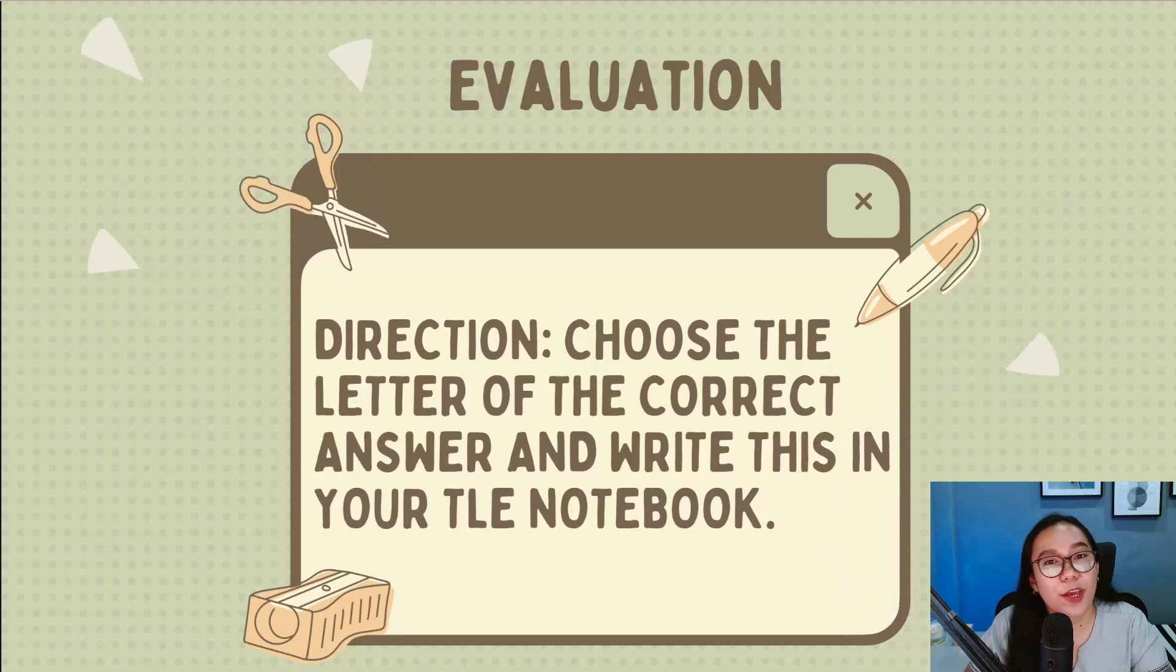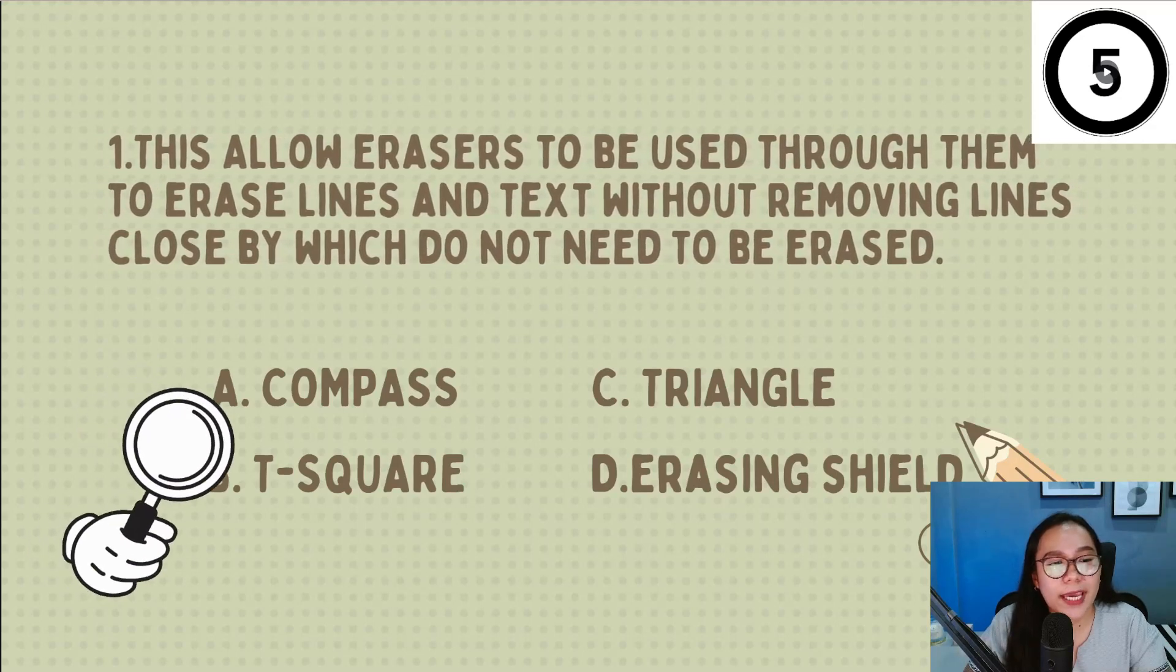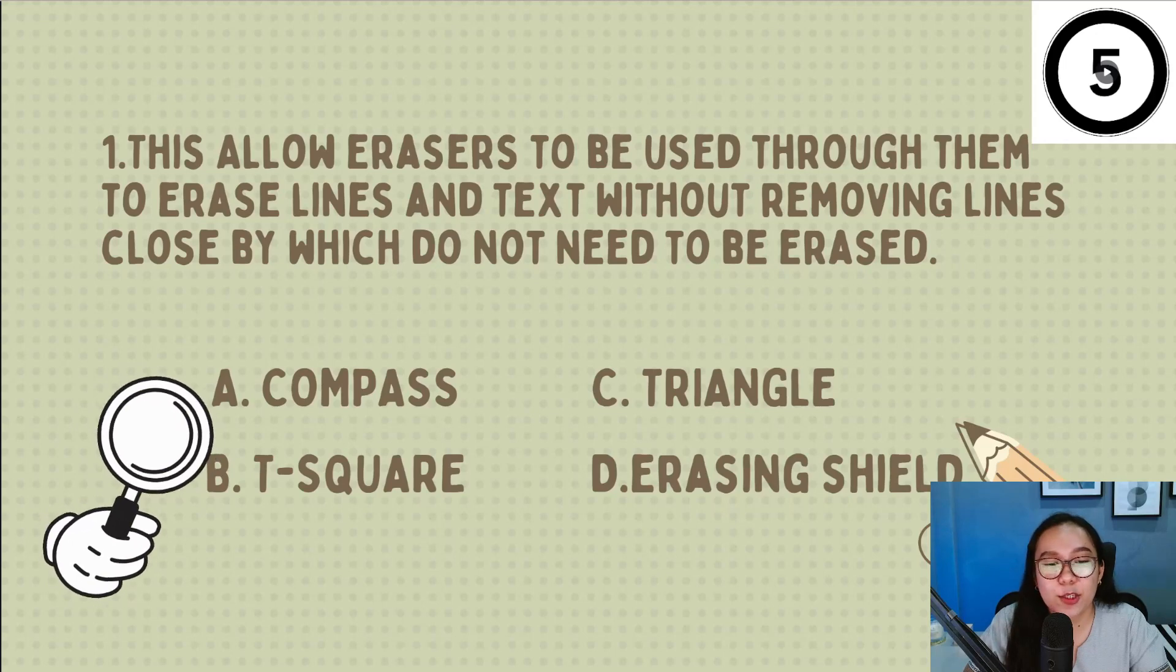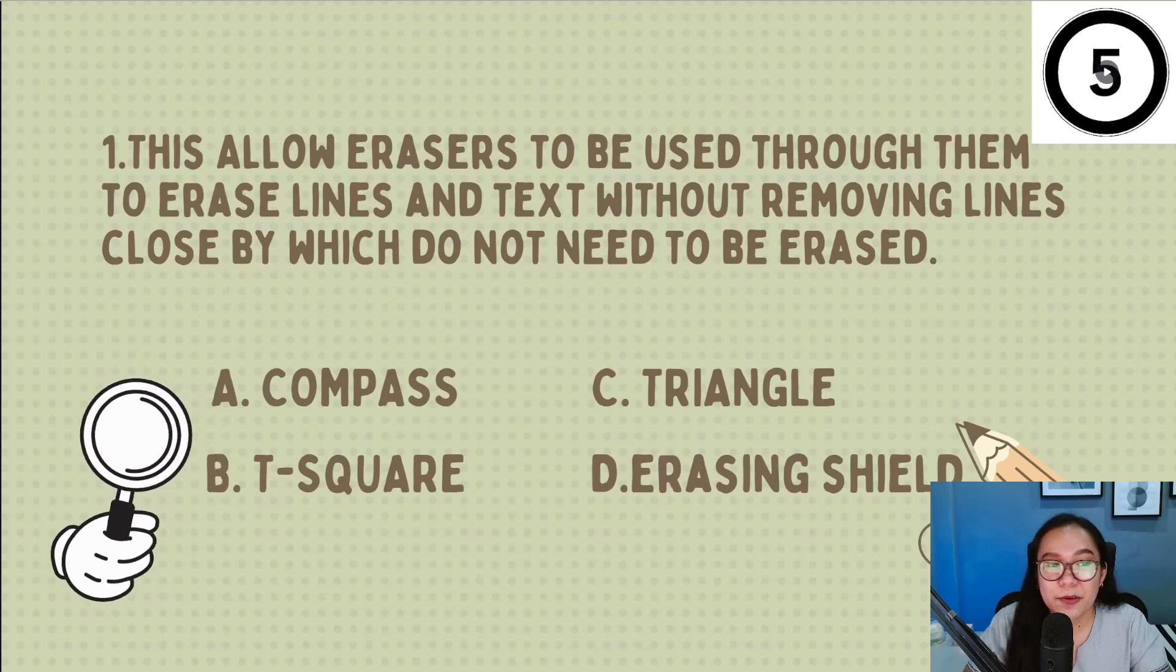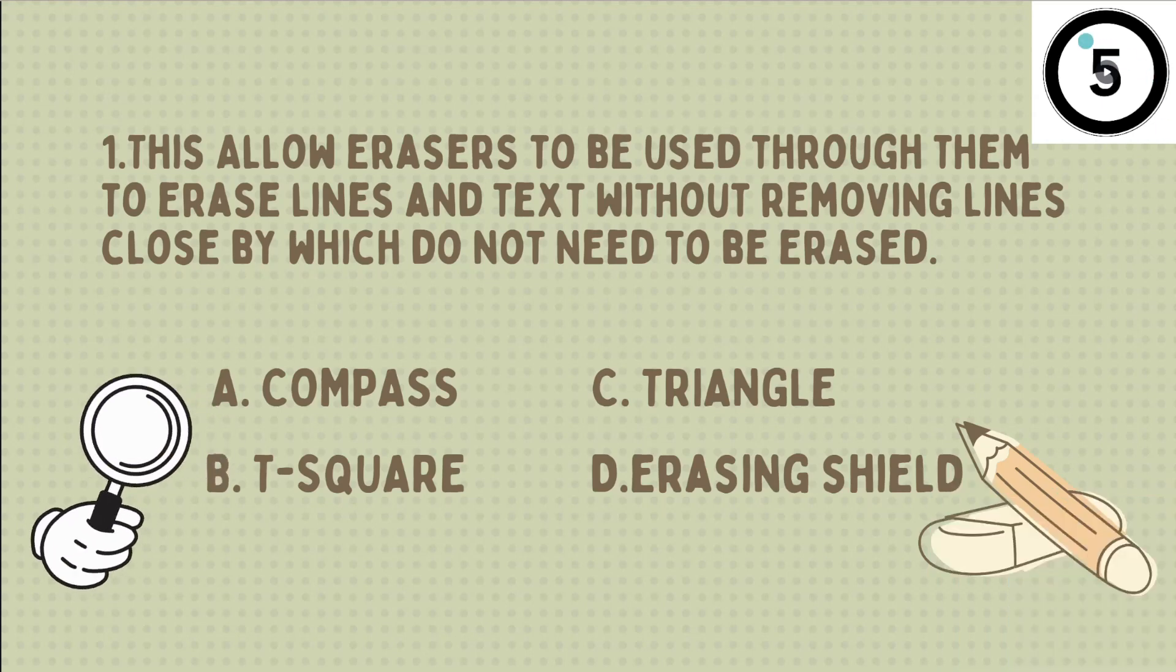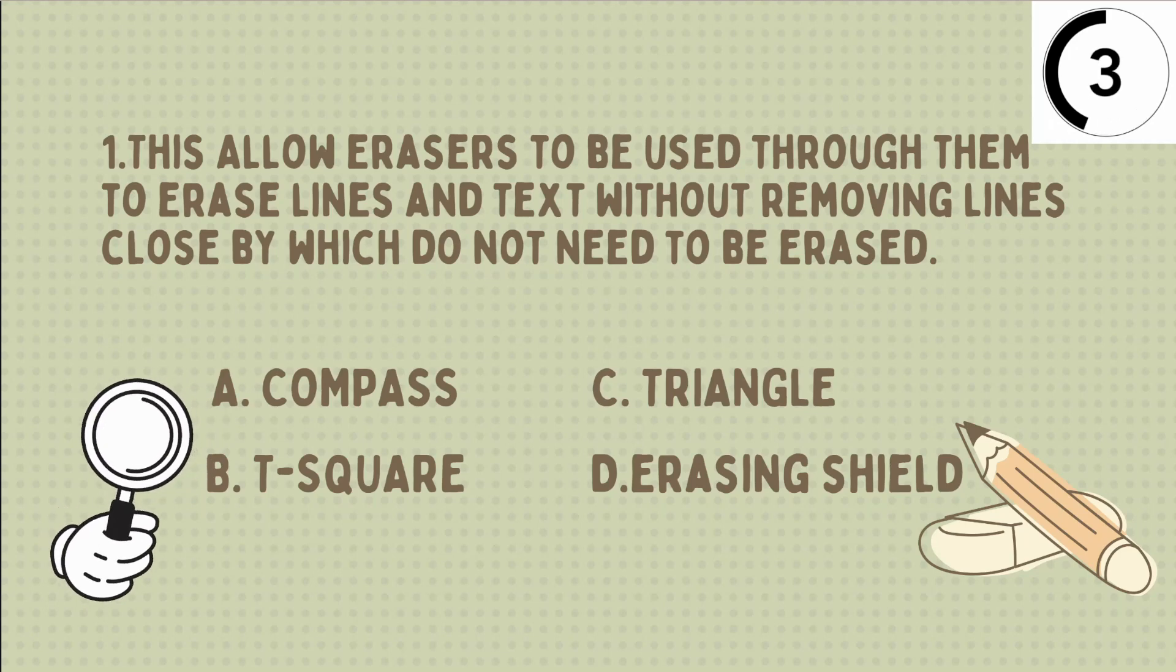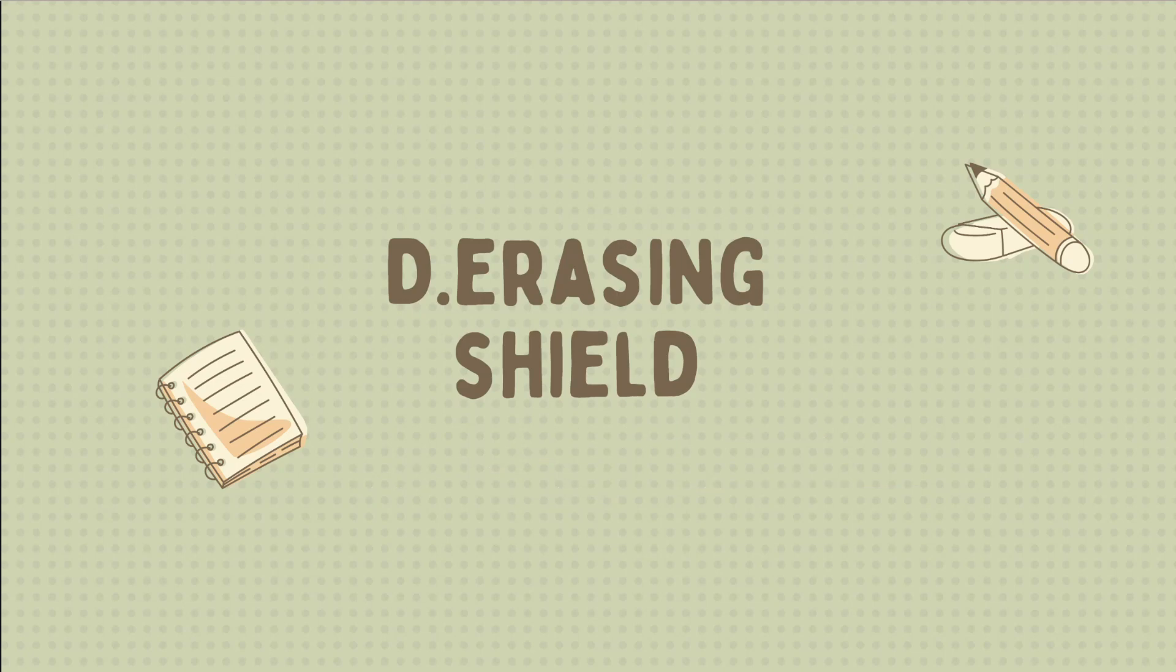This time, let's try to assess if you have understood our topic. Choose the letter of the answer and write this in your TLA notebook. Let's have number 1. These allow erasers to be used through them to erase lines and text without removing lines close by which do not need to be erased. Letter A, compass, B, T-square, C, sharpener, D, erasing shield. Now what's your guess? Very good! It's letter D, erasing shield.